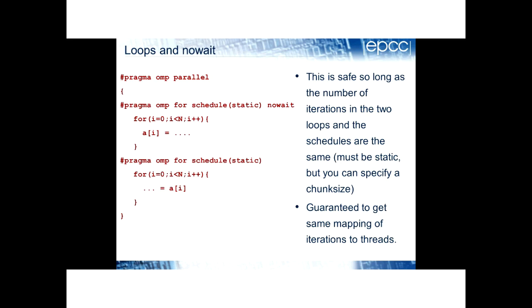In the example here, there is a data dependency between these two loops. The first loop iteration writes A[I], and the second loop iteration reads A[I]. So the question is: is it safe to put a nowait directive on the first loop and suppress the barrier?